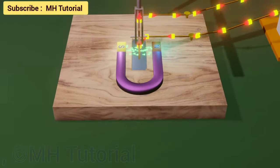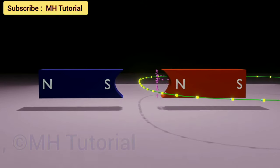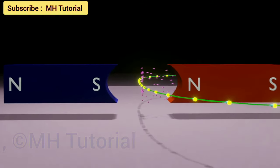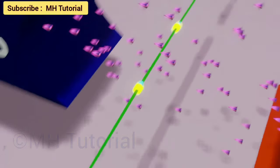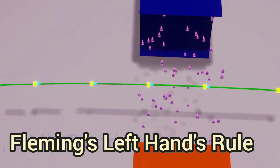When an electric current flows through a magnetic field, the magnetic field interacts with this current by exerting a mechanical force on it. Direction of this mechanical force can be determined by using Fleming's left-hand rule.